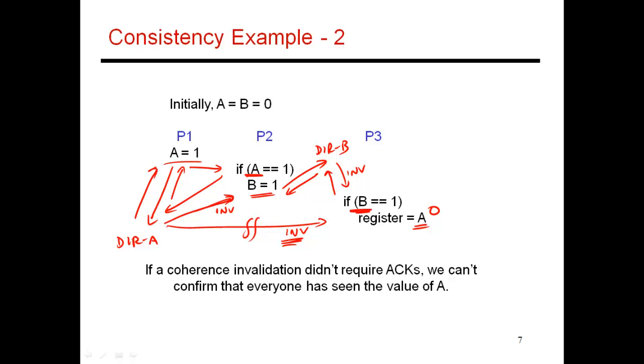So what is essentially happening in this case is we've violated the condition where we said that every instruction executes atomically. I'm supposed to complete this write of A equals 1 in its entirety before I move on to the next instruction. But in this case, there is an invalidation of A that is floating in the network. It has not yet finished completely, and yet I have decided to move on. This means that some people have seen the change to A, and some have not. So because I've violated this condition, I'm getting a result that is not sequentially consistent.